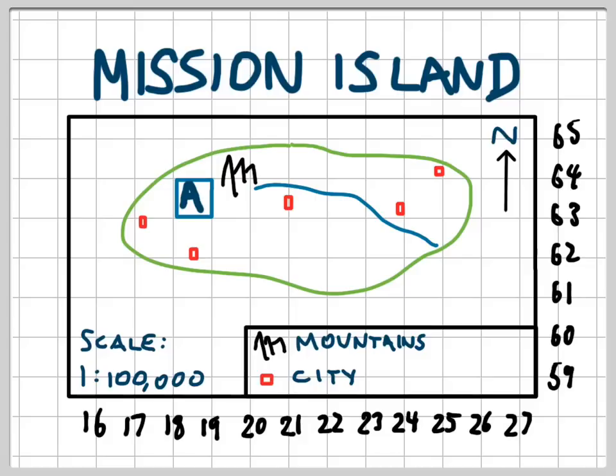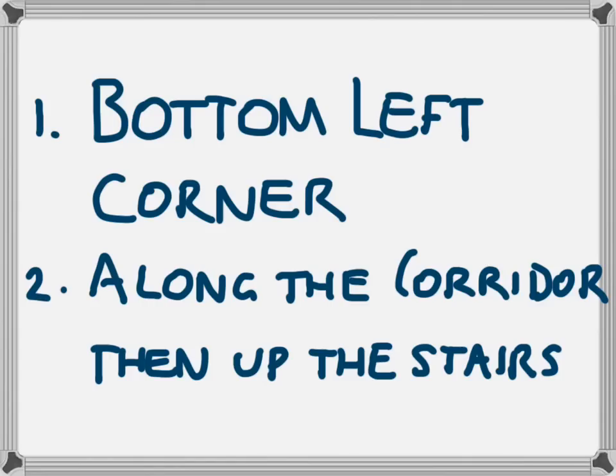Just a quick revision on this map of Mission Island of 4-figure area reference. If we're looking at the area that's marked with the letter A, there are two rules that we need to follow to work out the area reference. The first one is that we need to go to the bottom left corner, and the second one is that we need to go along the corridor and then up the stairs.